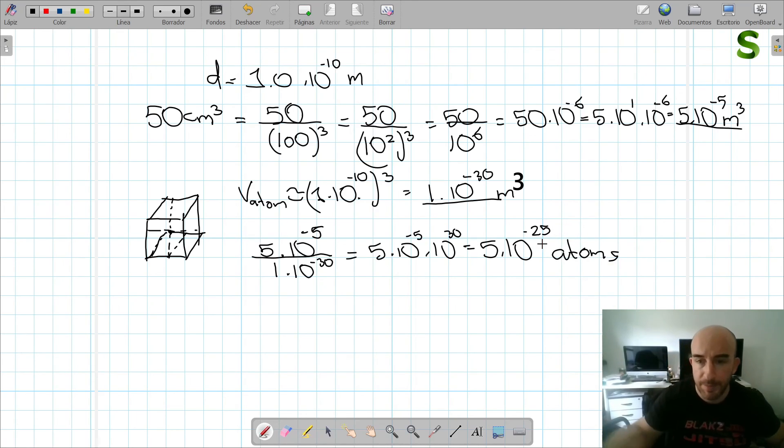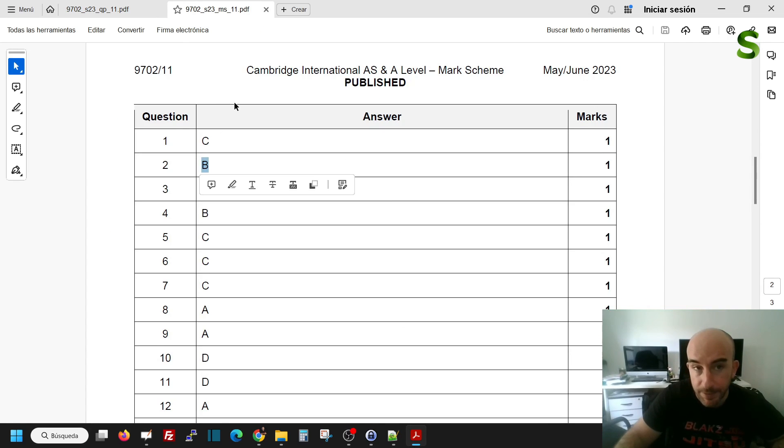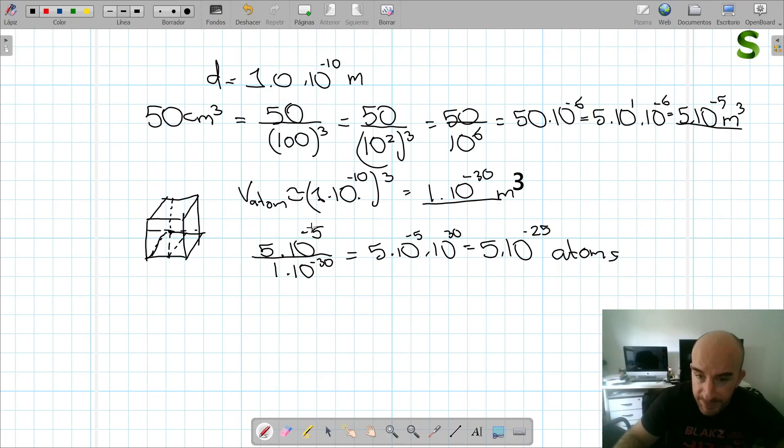As I said, an approximation. So let's go. That would be 5 to the power of 25 atoms. That would be option B. We go to the marking scheme. We've got option B, so that's the correct one. So that's how we solve this exercise. It's not complicated. But as I said, you are expected to know, and there's been various questions where they ask this in one or another way, the diameter of an atom.